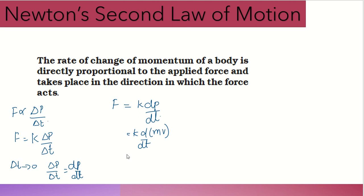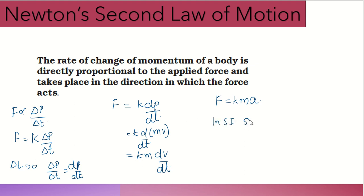Substituting momentum, since mass is constant in time, we get F equals K into m into dv by dt. The rate of change of velocity dv by dt is acceleration. So F equals K times mass times acceleration. In the SI system, the value of K is equal to 1, giving us F equals mass into acceleration.